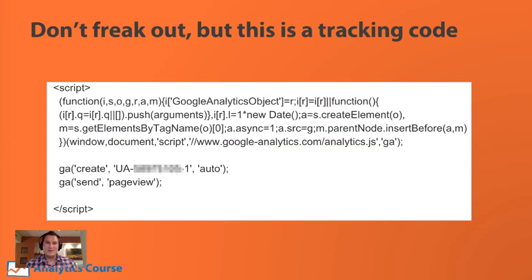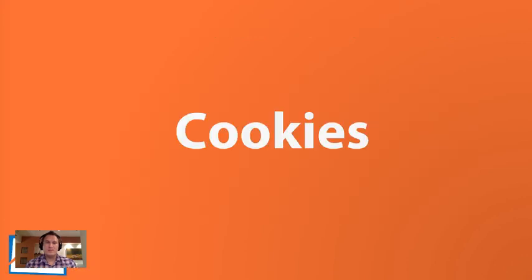I'm going to show you a preview of what that code looks like. This is the Google Analytics tracking code, and what this does is it basically sends data to Google Analytics each time that a new page is loaded. For now, I just wanted to give you a preview — if somebody says to you 'the tracking code' or 'the Google Analytics code,' this is what they're referring to, and this is what it looks like.